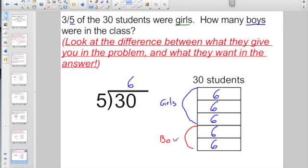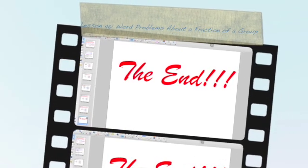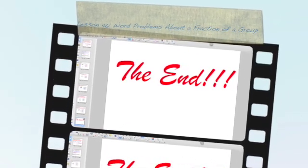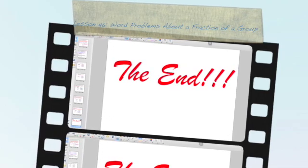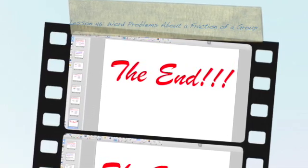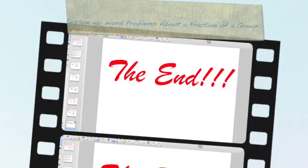So whatever's left over that's not girls has to be the boys. So how many boys were in the class? This is looking like there were 12 boys because if three fifths were girls, two fifths has to be the boys. And that, my friends, is the end. You are definitely going to want a scratch piece of paper and a pencil on today's Socrative quiz. Good luck.